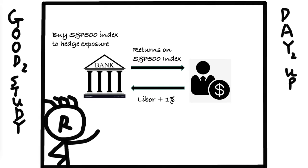If the S&P 500 index goes down, the investor will have to pay the bank the losses plus LIBOR plus one percent. So on the investor's side, the risk is similar to holding the S&P 500 because the investor is responsible for the losses and also for the cost of funding. On the bank's side, the risk would be if the S&P 500 index goes up, the bank will have to pay out to the investor.